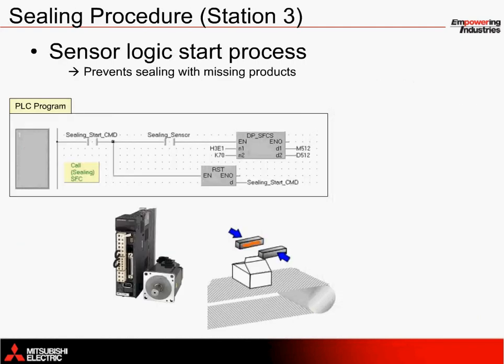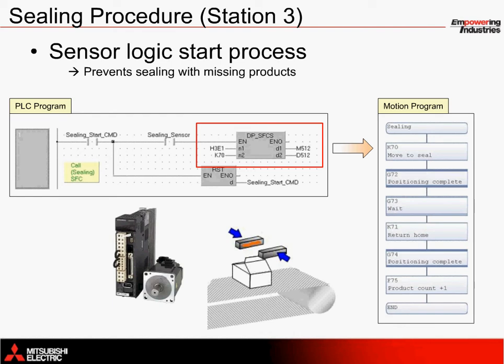Sealing begins with a DP-SFCS command from the structured ladder program in the PLC, which calls the motion program. You can see the DP-SFCS command calling motion program number 70. Condition requirements include a filling complete signal and a sealing station sensor on signal.